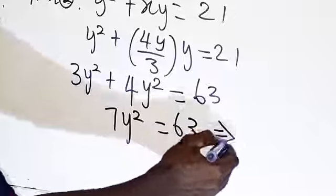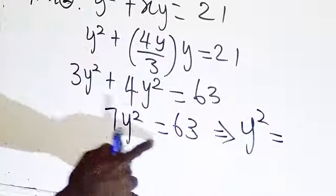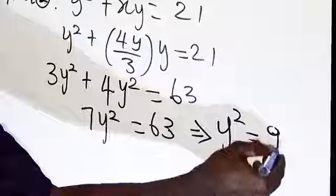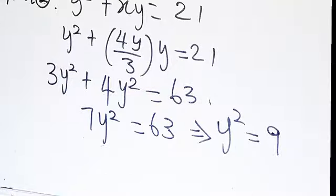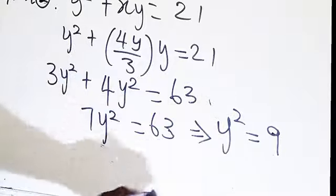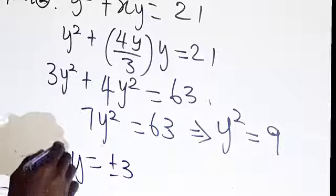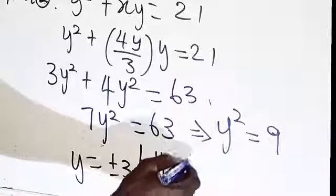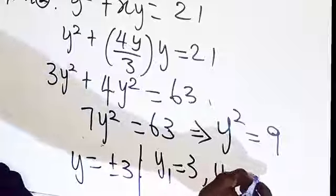So 3y squared plus 4y squared gives us 7y squared equals 63. Dividing both sides by 7, we get y squared equals 9. Taking the square root of both sides: y equals plus or minus 3. So y1 equals 3 and y2 equals minus 3.